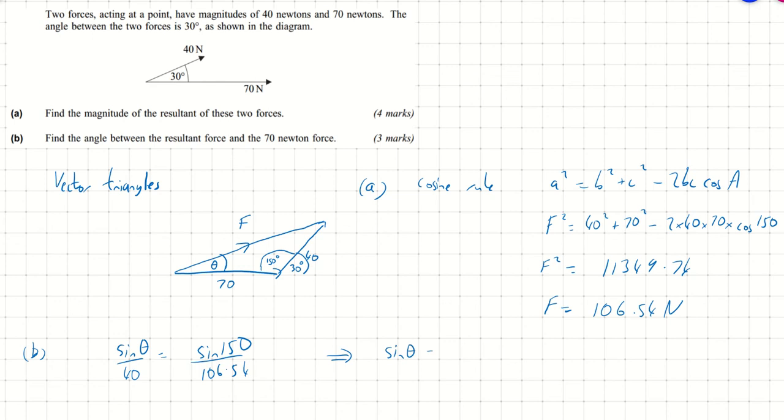Okay, and just rearranging this we get that sine theta is 40 times sine 150 over 106.54. So let's just plug those numbers into my calculator. I get 0.1877. That's what sine theta is.